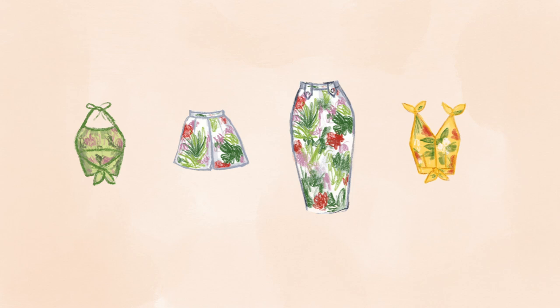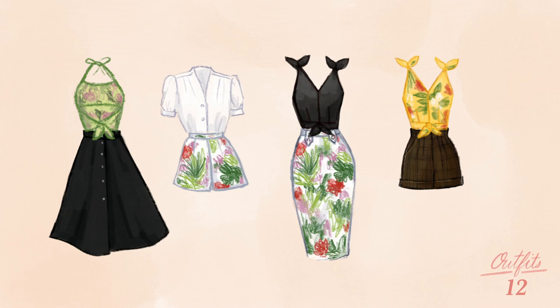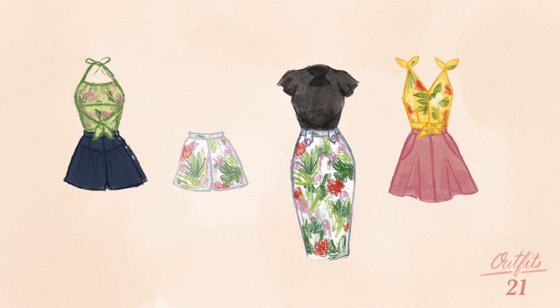Let's make some outfits! Starting with the Tiki capsule — there are four core pieces and a whole bunch of what I'm calling bridge pieces. Those are the overlapping part of the Venn diagram. 24 Tiki outfits total.